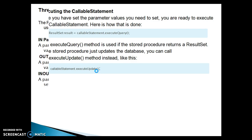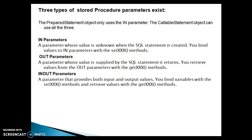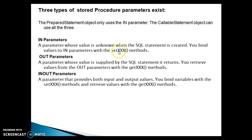Now we will discuss the three types of stored procedure parameters. The prepared statement object only uses IN parameters. The callable statement object can use all three types: IN, OUT, and IN/OUT parameters. An IN parameter is one whose value is unknown when the SQL statement is created — you bind values for IN parameters using the setXxx methods, where Xxx represents different primitive or other data types available in Java.